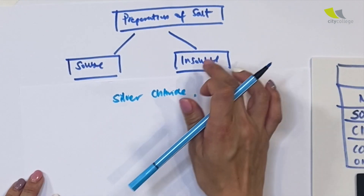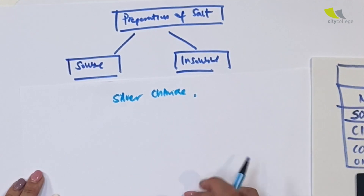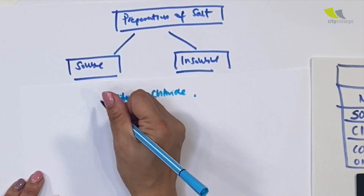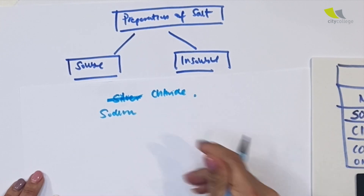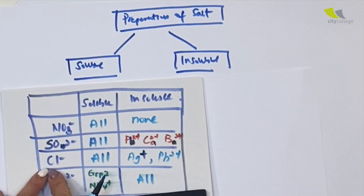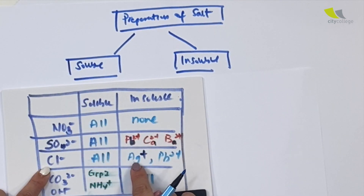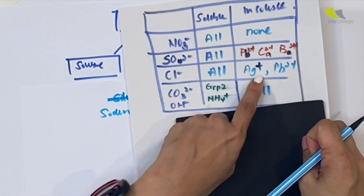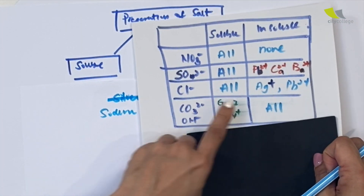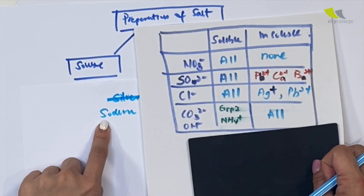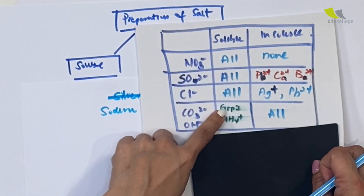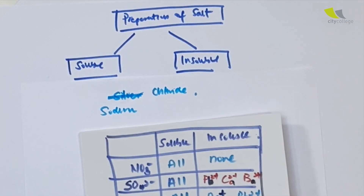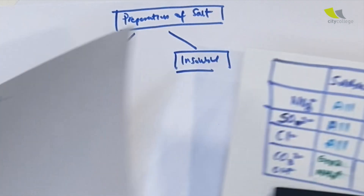What if I change to sodium chloride? This table says chloride — all are soluble except for silver and lead. Sodium is not silver, and this is not lead, but it's sodium. So all are soluble — under the soluble category. Now you know roughly how to use this table.